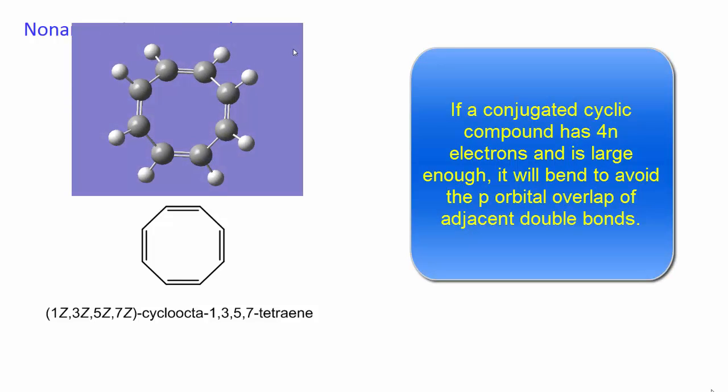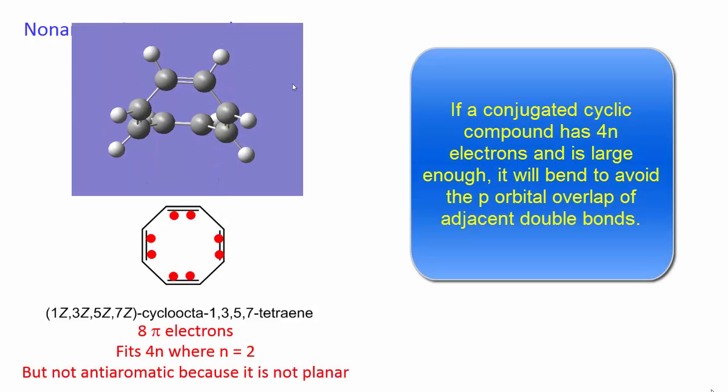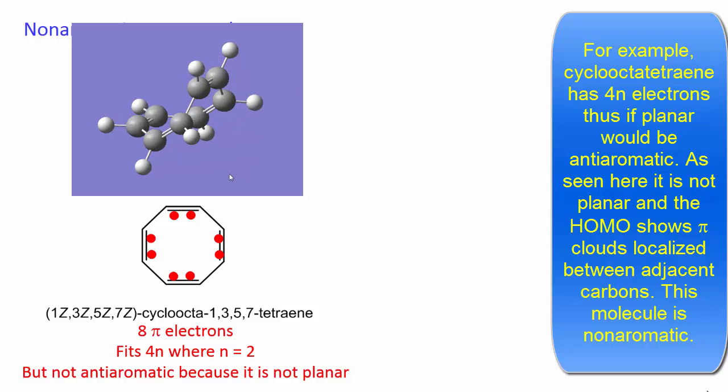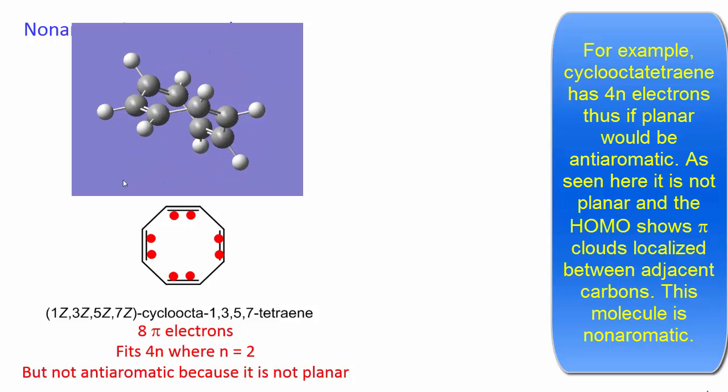If a conjugated cyclic compound has 4N electrons and is large enough, it will bend to avoid the pi orbital overlap of adjacent double bonds. For example, cycloheptatriene has 4N electrons, thus if planar would be anti-aromatic.